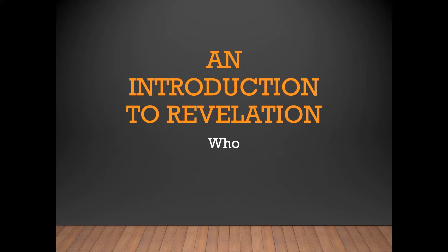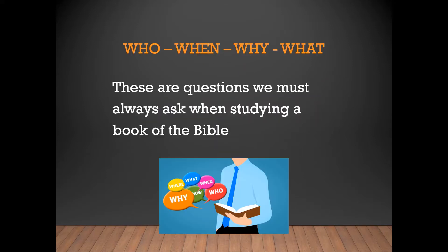As I do with every book that I study, I ask myself four questions: who, what or who, when, and why. Who was the book written to — we're told that in the introduction. Who was it written by? When was it written? This has been a source of contention. Early Bible scholars and some commentaries date the book of Revelation before AD 70 and the destruction of Jerusalem, and that is an incorrect dating. It was written about AD 90 or 96.